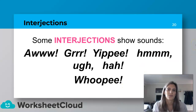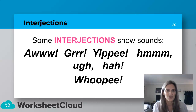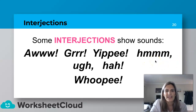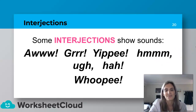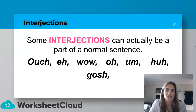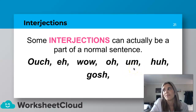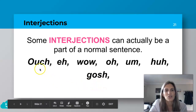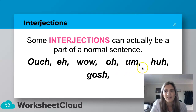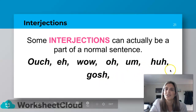Some interjections show sounds — we spoke about some of them. The delicious dessert: "mmm." We've also got "oh," "grr," "yippee," "ha," "whoopee." Some interjections can actually be part of a normal sentence. A lot of us incorporate "um" — we say, "Um, I don't know about today." We also go "ouch," "eh," "wow," "oh," "um," "huh," "gosh." Those are just some more examples.